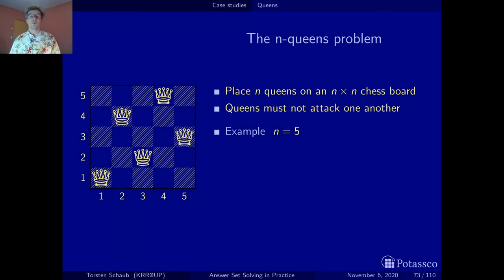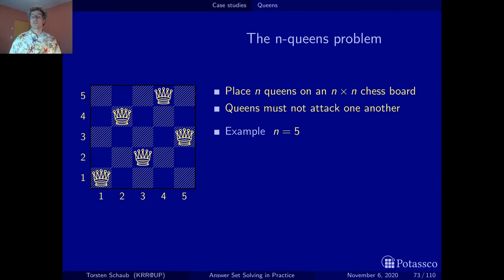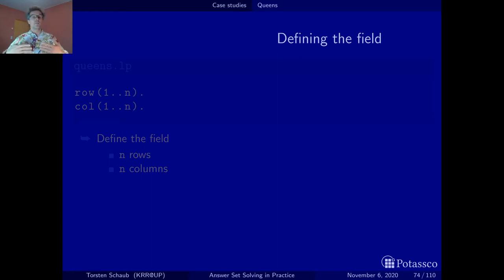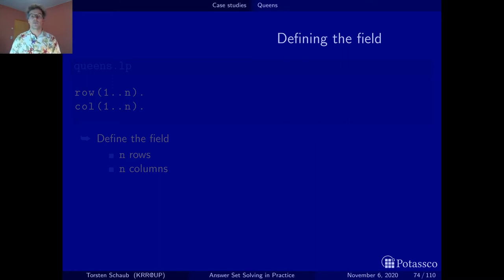So let's start posing. The idea is to declare the rules of the N-Queens problem one after the other and slowly develop the problem encoding, then just push the button and let the computer solve the problem for us.